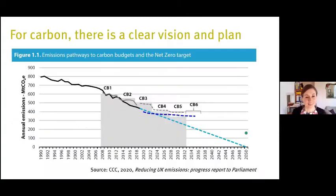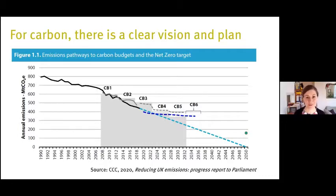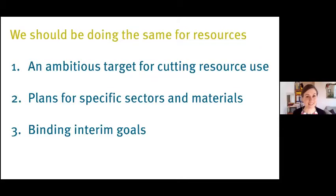Such an overarching framework for a massive environmental problem is not without precedent in the UK. For carbon, we know exactly where we want to get to — this CCC graph shows clearly the destination. We want to reach net zero emissions by 2050, staying on track with expert advice from the Committee on Climate Change, who help the government set legally binding carbon budgets and make recommendations for specific sectors to ensure everyone is pointing towards that one common goal.